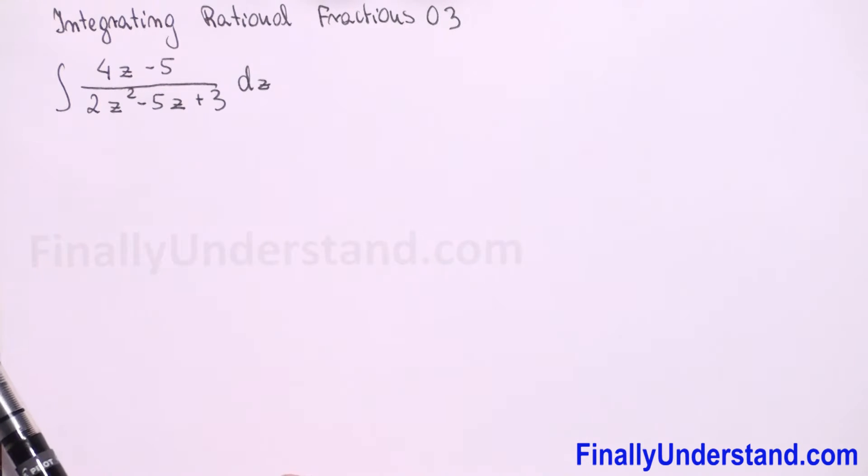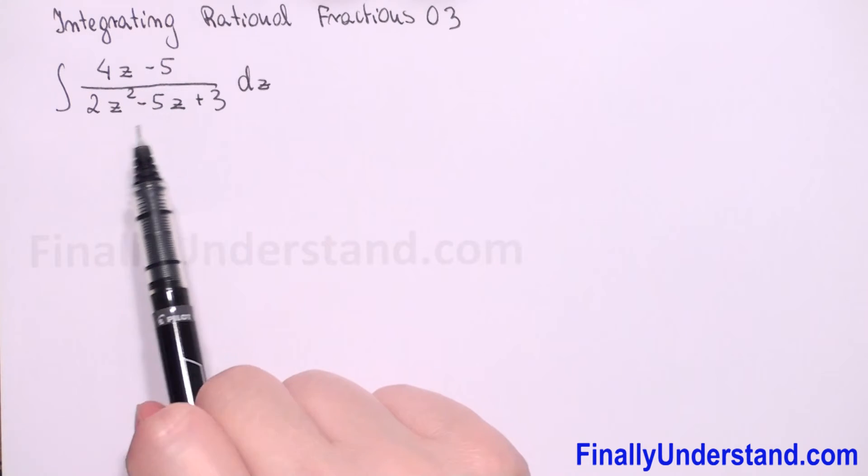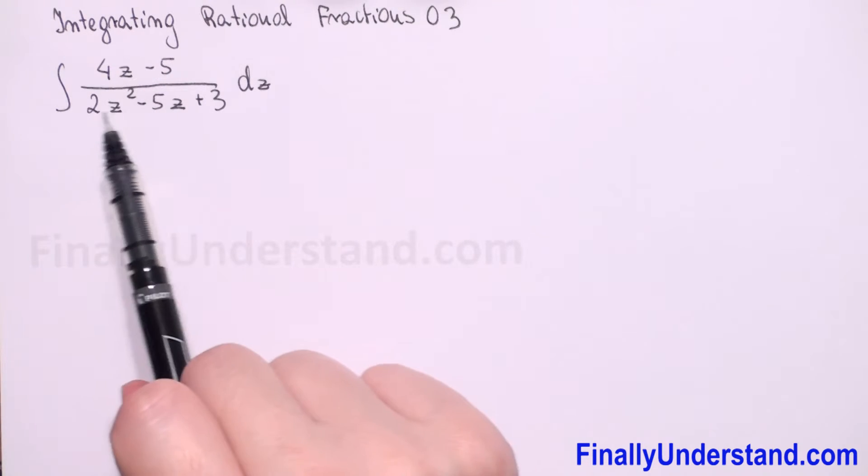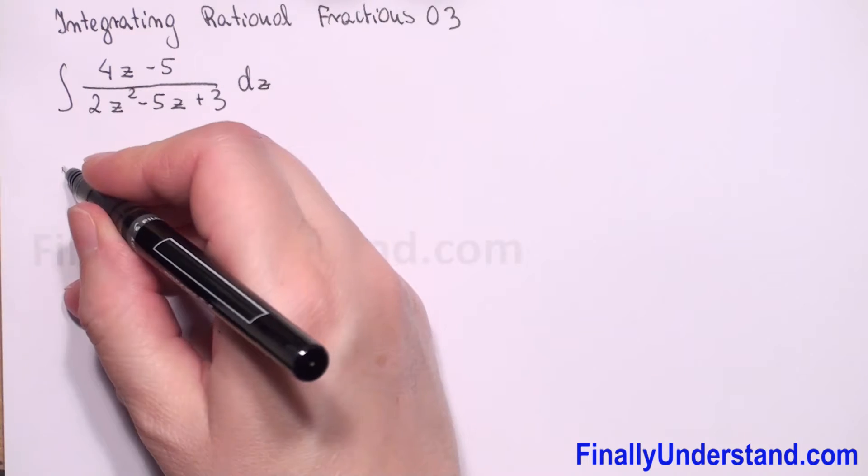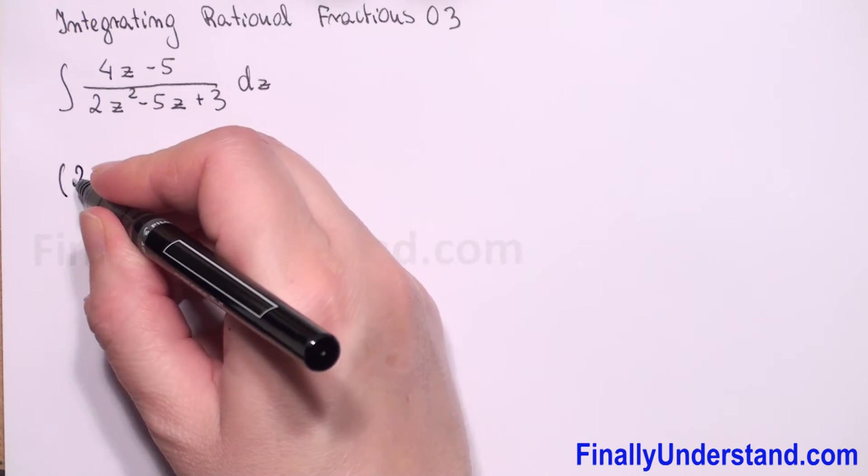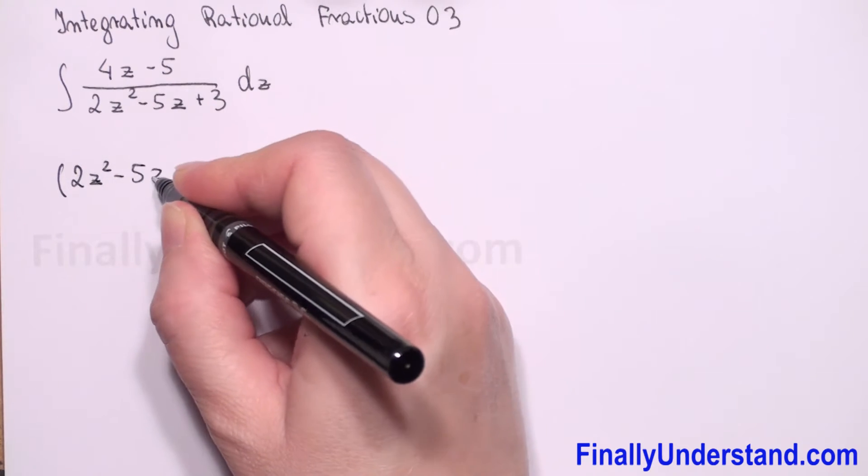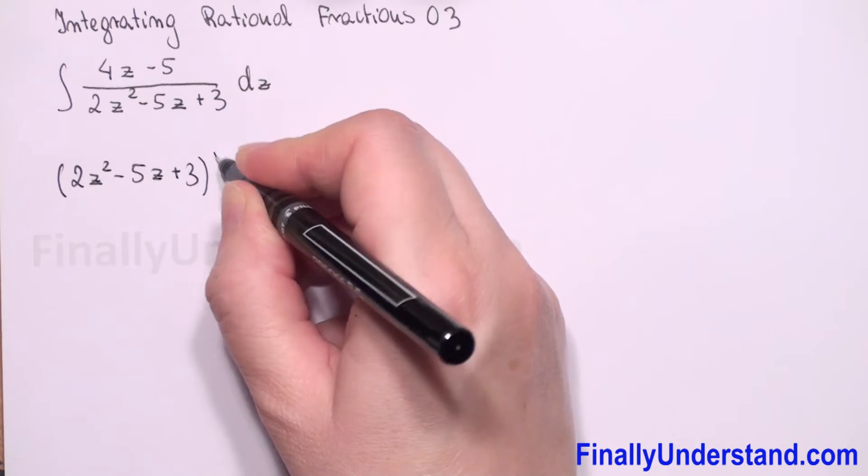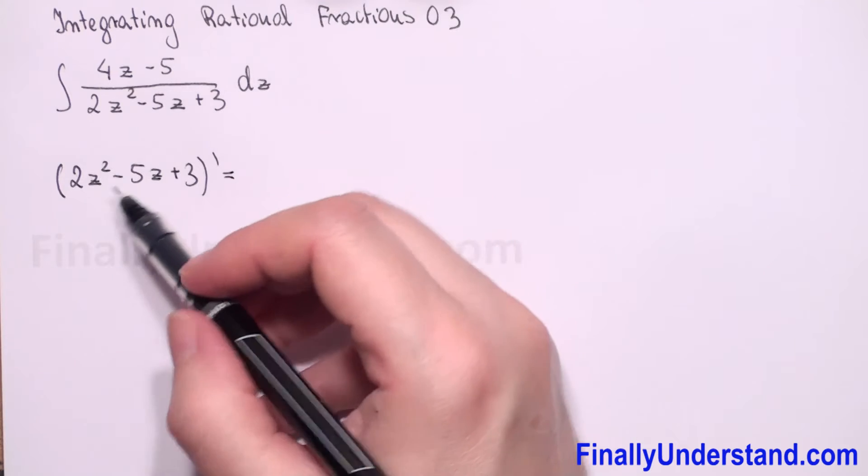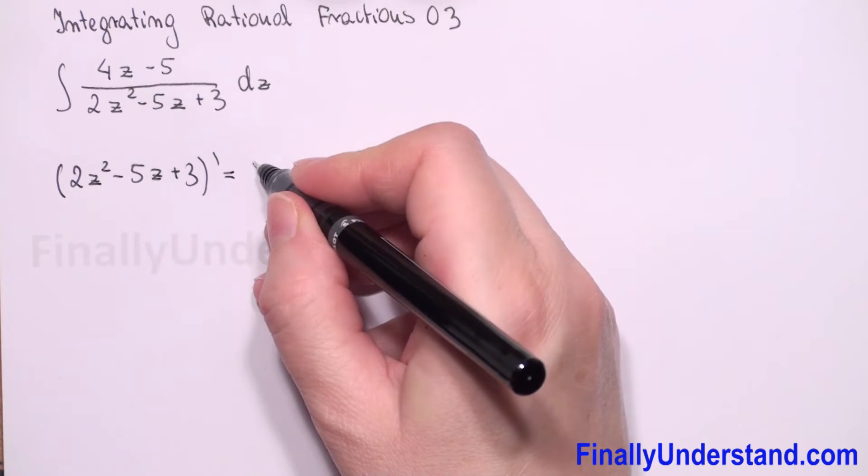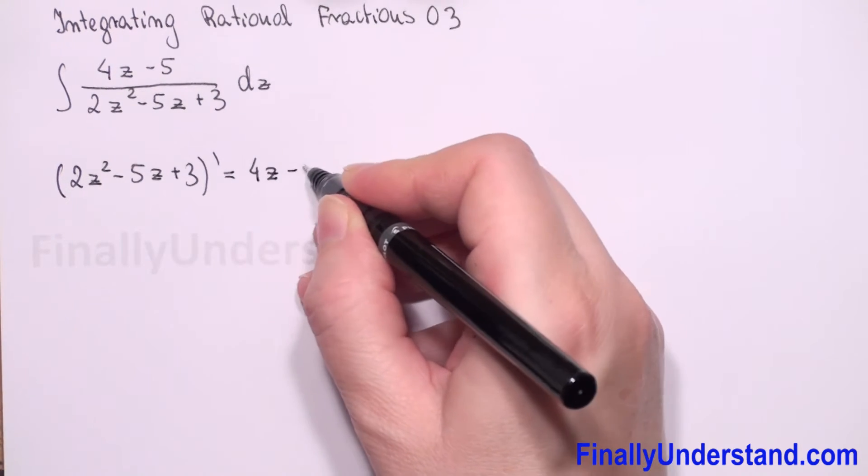Next step we have to check if we don't have in numerator derivative of denominator. Derivative of denominator, we have 2z squared minus 5z plus 3. So let me take this derivative, will be 4z minus 5.